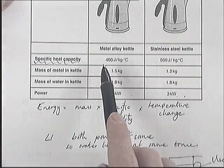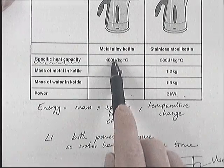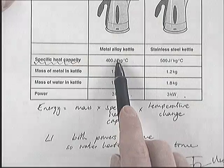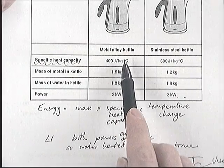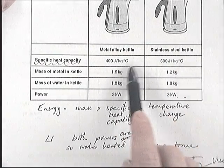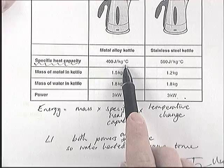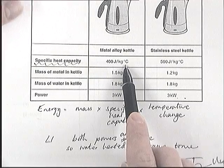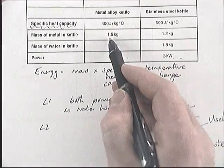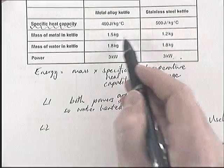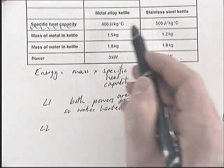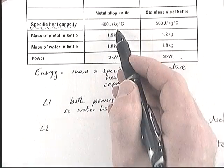Specific heat capacity means how much energy does it store for each kilogram for each degree Celsius rise. They're both going to rise to 100 degrees Celsius, so we're going to ignore that. They both have different masses but they also have different specific heat capacities.